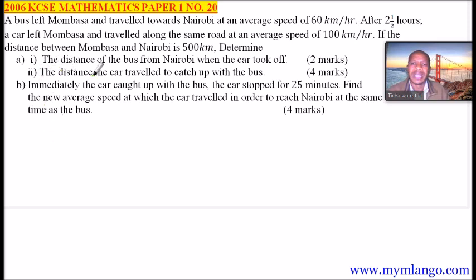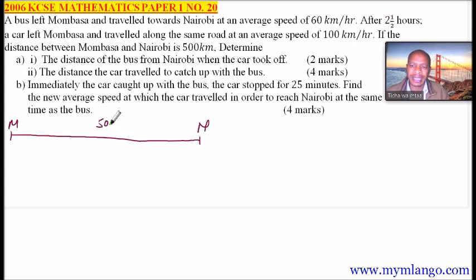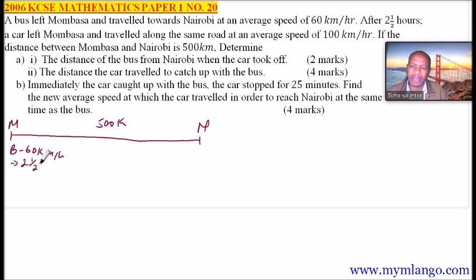We start with part A. We are told to find the distance of the bus from Nairobi when the car took off. What I normally do to work out this kind of question very comfortably is make a sketch of the information given. So I'll make a line — this is Mombasa and this is Nairobi, 500 km apart. Here we have the bus travelling at 60 km per hour, and by the time the car started the journey, the bus had travelled for 2.5 hours. The car is travelling at a speed of 100 km per hour.